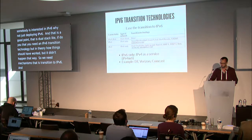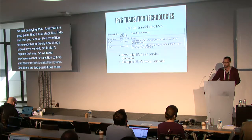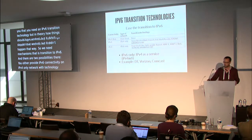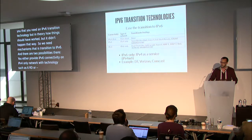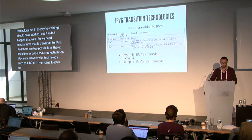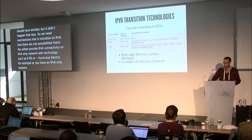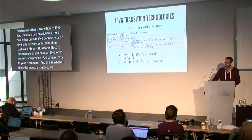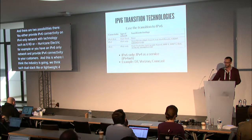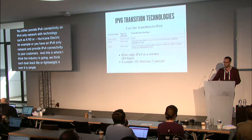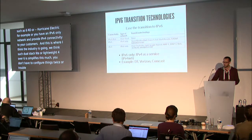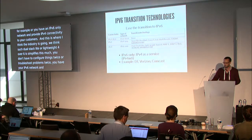There are two possibilities. You either provide IPv6 connectivity on an IPv4-only network with technologies such as 6RD or a tunnel broker like Hurricane Electric. Or you have an IPv6-only network and provide IPv4 connectivity to your customers. This is where I think the industry is going — with things such as dual stack lite, LightWare 4.6, or 464XLAT. It simplifies things: you don't have to configure or troubleshoot problems twice. You just have your IPv6 network and offer IPv4 connectivity to customers.